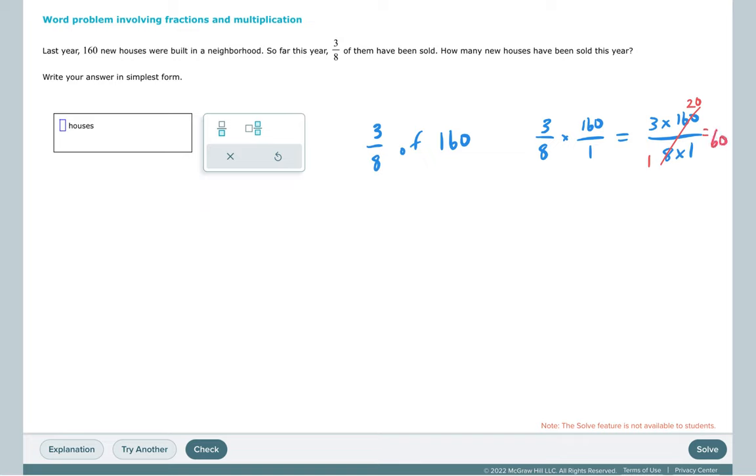Second way that I would recommend doing it is figure out what is one-eighth of 160. And one-eighth of 160 is twenty. But we want three-eighths, so we need to multiply this by three, which gives us sixty new houses.